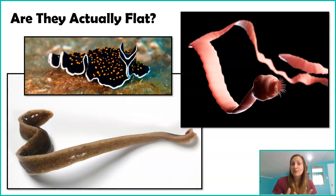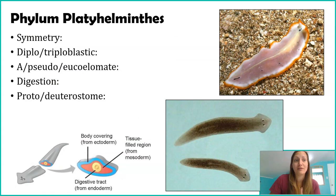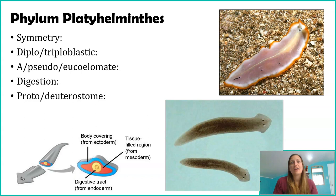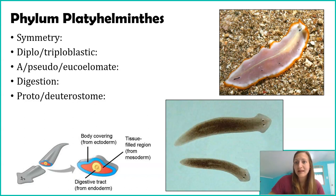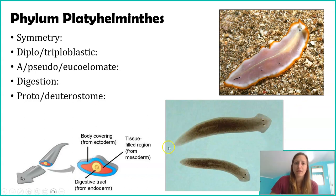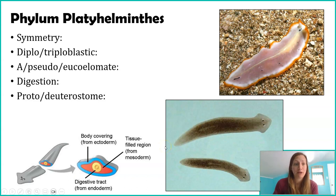Now let's explore some of the other characteristics we use to describe different animal groups. First off, we can talk about their symmetry. As you may have noticed in the phylogenetic tree, they are in the bilateria, or bilateral group. You can see that line of symmetry moving down the lengthwise of flat worms.